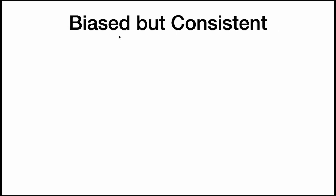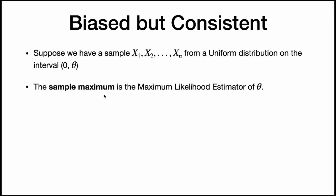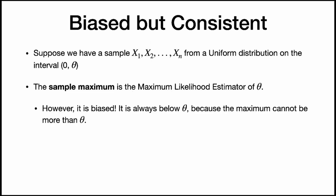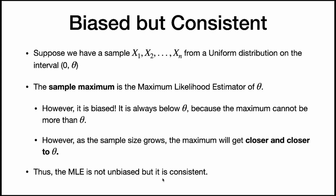Biased estimators can also be consistent. Suppose we have a sample x1 through xn from a uniform distribution on the interval from 0 to theta. The sample maximum is the maximum likelihood estimator of theta; however, it's biased because the maximum is always going to be less than theta. But as the sample size grows, the maximum will get closer and closer to theta — values will fill out the whole distribution, getting really close to theta when we take the maximum. So the maximum is a consistent estimator even though it's biased. Given some mild restrictions, the MLE is always consistent.